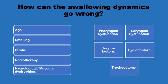There are general factors that affect the central integration of the swallowing process — like age, stroke, neurological problems — or that affect the whole process at different levels, like smoking or radiotherapy. And there are specific local factors affecting either the larynx, the pharynx, the hyoid, the tongue, or patients who have a tracheostomy.